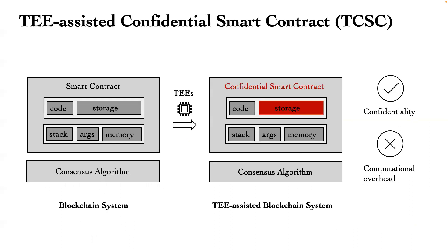We introduce the notion of TEE-assisted confidential smart contracts. It combines the hardware-based TEE with existing blockchain architecture, especially in its storage layer. The participants will equip the TEE into their operating nodes, ensuring every input, output, and execution can be physically sealed.